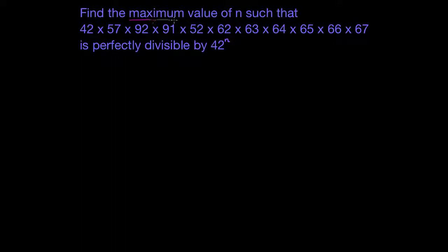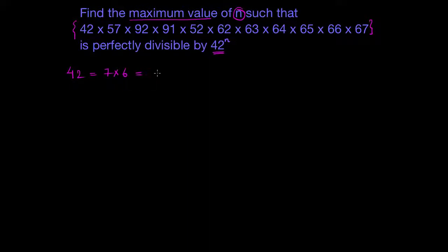Find the maximum value of n such that this given multiplication is perfectly divisible by 42 to the power n, which means we need to find the number of 42s in this given multiplication. Now, 42 is 7 times 6, which can further be reduced to its prime factors as 7 times 3 times 2. So in order to get one 42, I need one 7, one 3, and one 2. Basically, we need to find the number of 3s, 7s, and 2s in this given expression.